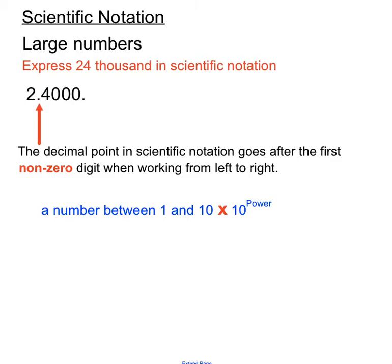To get a scientific notation expression we want a number between 1 and 10, so we want to move that decimal point to create that. The decimal point in scientific notation goes after the first non-zero digit working from left to right. So going from left to right, the first non-zero digit is the 2, meaning the decimal point should go between the 2 and the 4. We'll take careful note of how many place values we've moved that decimal point.